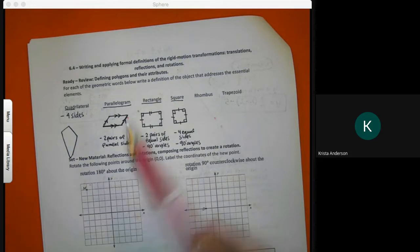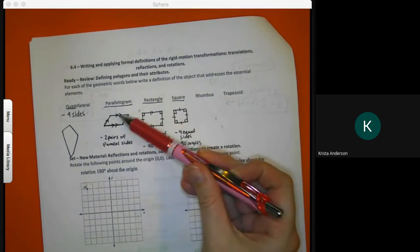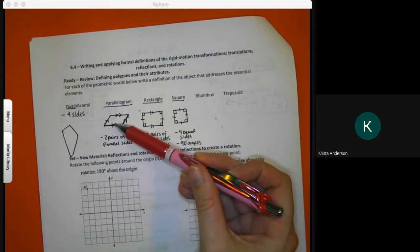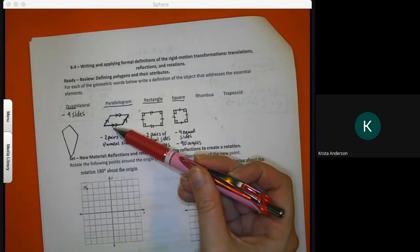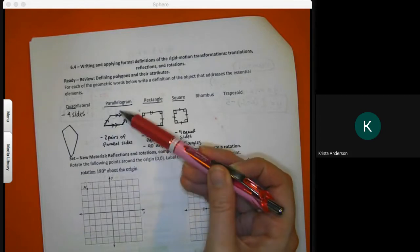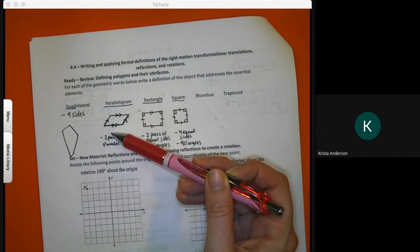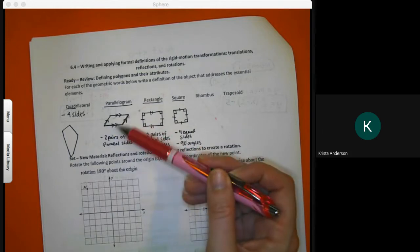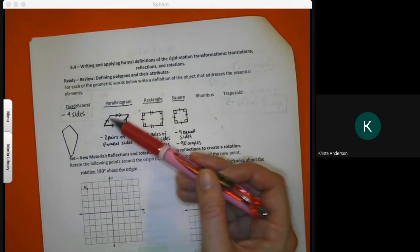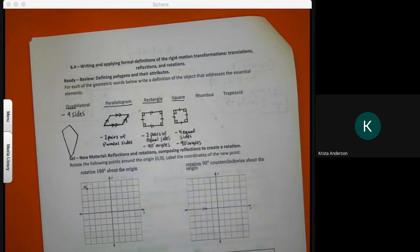By properties I mean, what do you think this length and this length have in common? They're the same. So like if this was a five, this measurement would be a five. So we'll use algebra to find sides and angles.